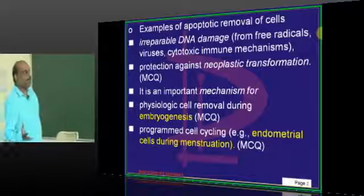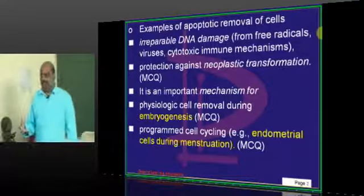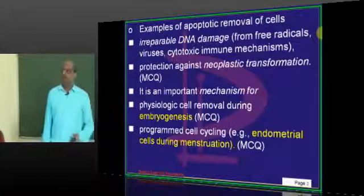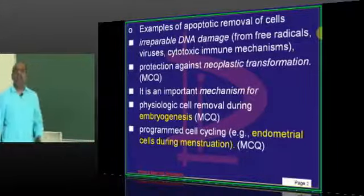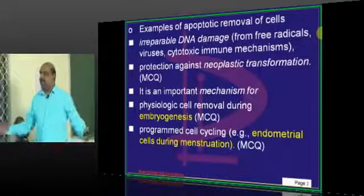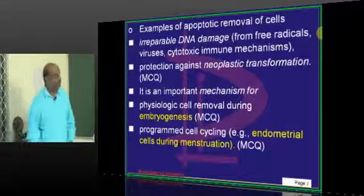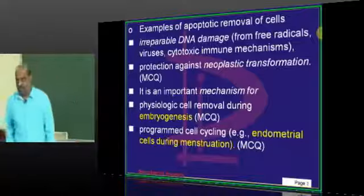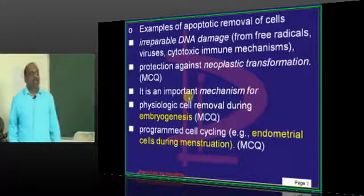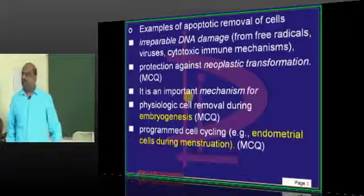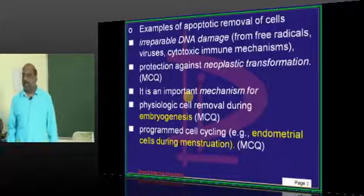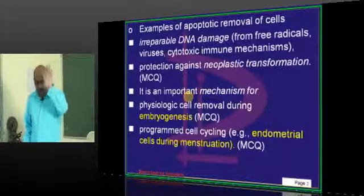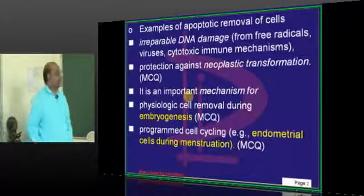What are the classical examples of scenarios where you see apoptosis? Whenever there is any irreparable DNA damage — beyond what DNA polymerases 1, 2, 3 can repair — that acts as a stimulus for apoptosis to happen. Similarly, in neoplasia: why don't cells hyperproliferate and lead to cancer that easily? Because whenever they get an idea of doing that, apoptosis will make those cells shut down.